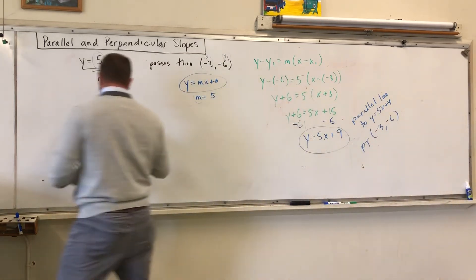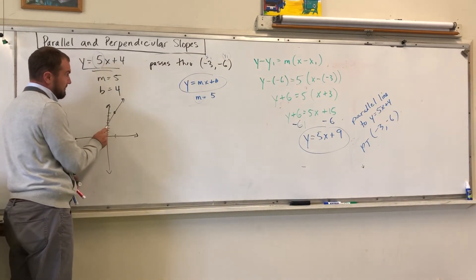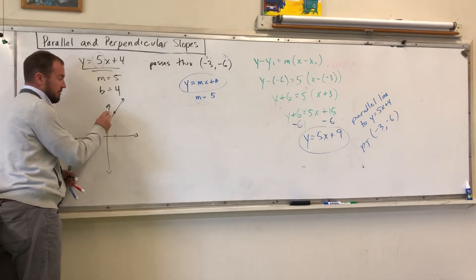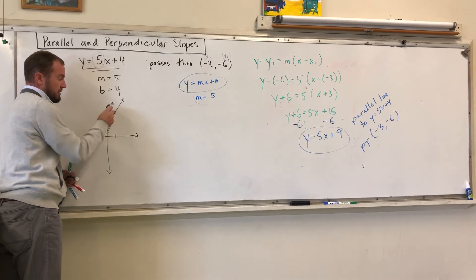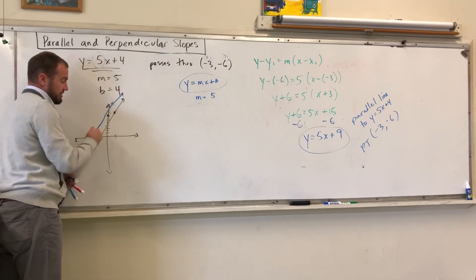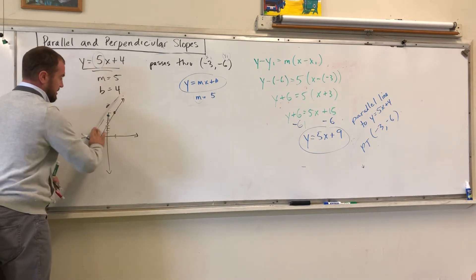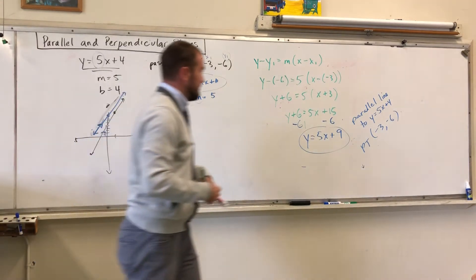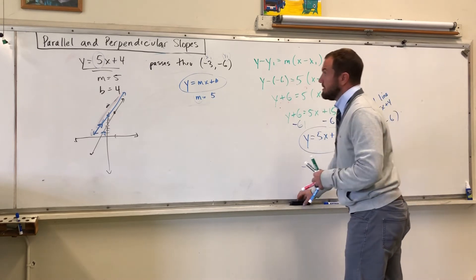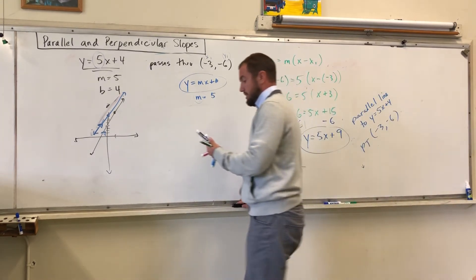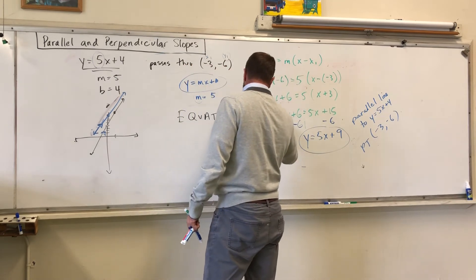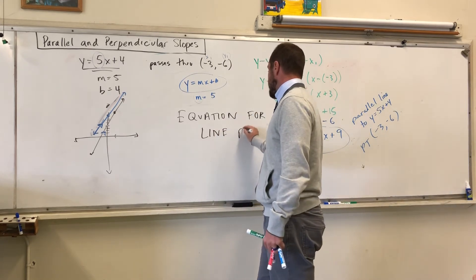If I graph that, the y-intercept which was once 4 is now 9, and the rate of change is the same — going up 5 over 1. So the rate of change here is the same; you would see something parallel. A couple of arrows is the geometric sign for parallel. That's the equation for the parallel line.